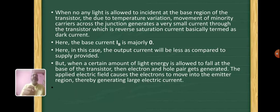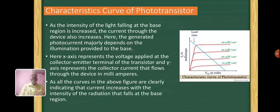In this case, the output will be less as compared to the supply provided. But when a certain amount of light energy is allowed to fall on the base of the transistor, then electron-hole pairs get generated. The applied electric field causes the electrons to move into the emitter region, thereby generating large electric current.